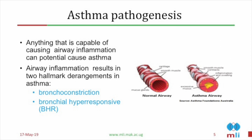How does asthma develop? That's what we call pathogenesis. Anything that can cause airway inflammation can actually cause asthma — all of us are potential asthmatics. If you were put in a room and pumped with nitrogen dioxide at a high dose, you would start wheezing and coughing, and clinically you would have asthma. However, there are two hallmarks of asthma: when inflammation happens, it causes bronchoconstriction and bronchial hyperresponsiveness — that's what we call 'entorno.' You have the susceptible gene, you meet these triggers, they cause inflammation, your body is primed, and next time you encounter them, you develop symptoms.